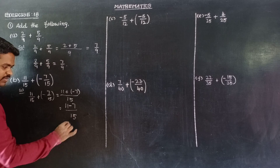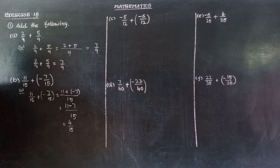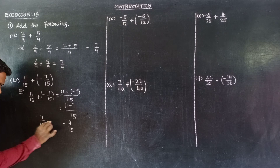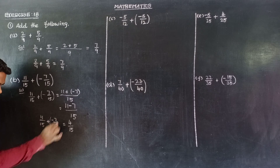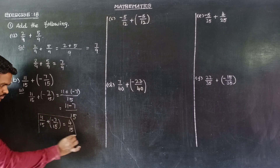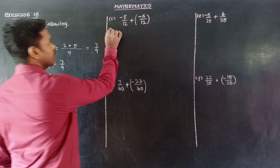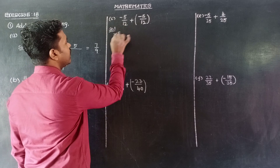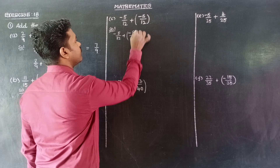So 11 minus 7 is 4 by 15. So the answer is 11 by 15 plus minus 7 by 15 is equal to 4 by 15. Next, subdivision C: minus 5 by 12 plus minus 8 by 12.